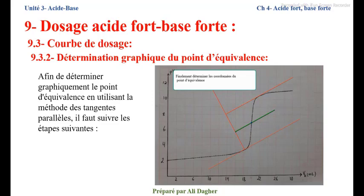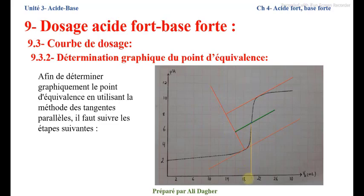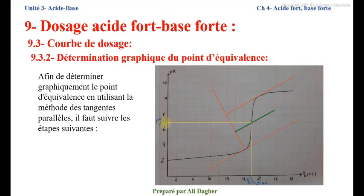Finalement, on détermine les coordonnées du point d'équivalence. On trace une ligne verticale pour déterminer le volume de base versée à l'équivalence VBE, qui est égal ici à 20 millilitres. Et on trace une ligne horizontale pour déterminer le pH à l'équivalence, égal à 7. C'est la méthode des tangentes parallèles qui permet d'identifier le point d'équivalence de la courbe de dosage.